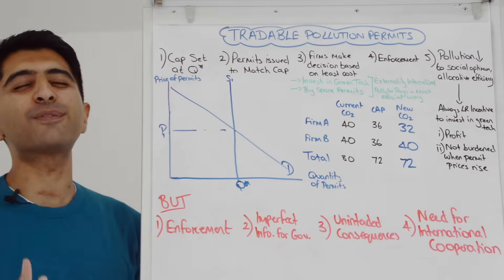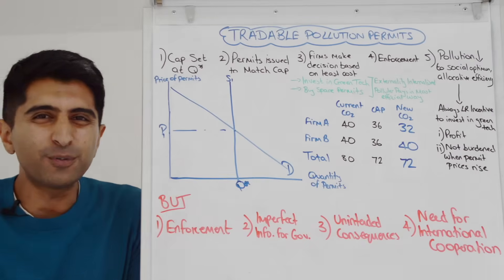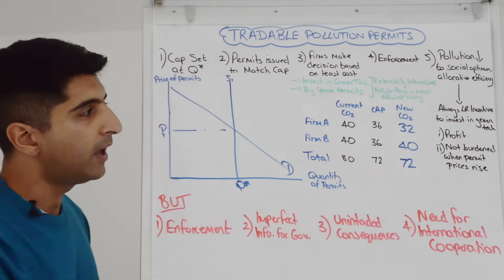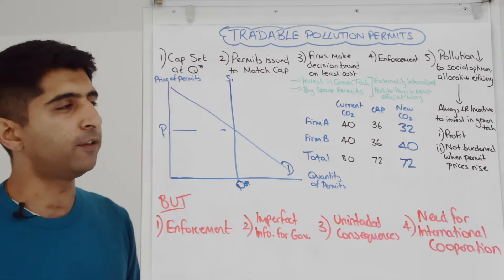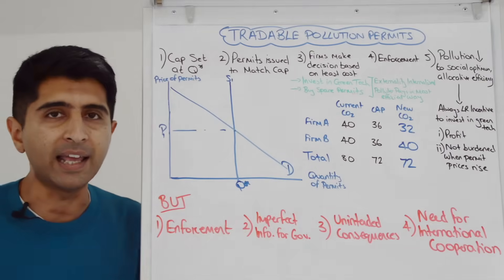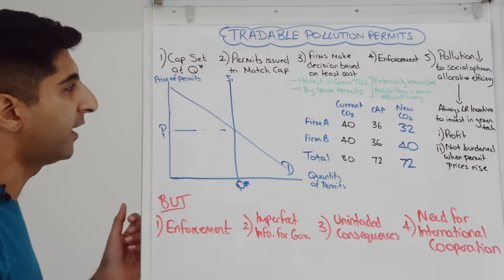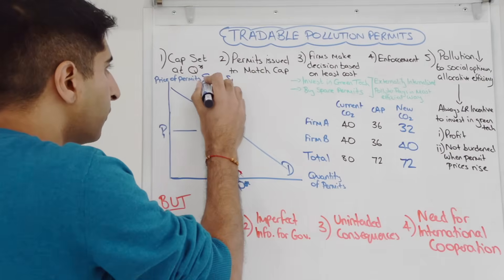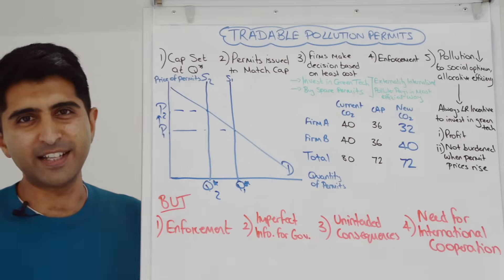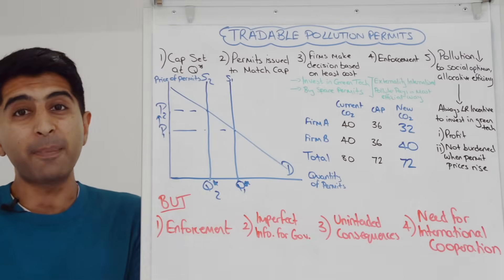Even better, this policy promotes incredible long-run incentives — always for firms to invest in green technology, which is really what society would like firms to do. Firms that are really successful can profit from the sale of spare permits. Also, firms that invest in green tech will never be burdened when permit prices rise — and I said when, not if. Permit prices always rise, perhaps from a sudden rise in demand, but more likely as governments tighten the cap over the years, reducing the number of permits in circulation and shifting the supply curve left from S1 to S2. The price of permits rises from P1 to P2, but if you've invested in green technology you're not bothered — in fact you can sell spare permits at a higher price and make more profit.